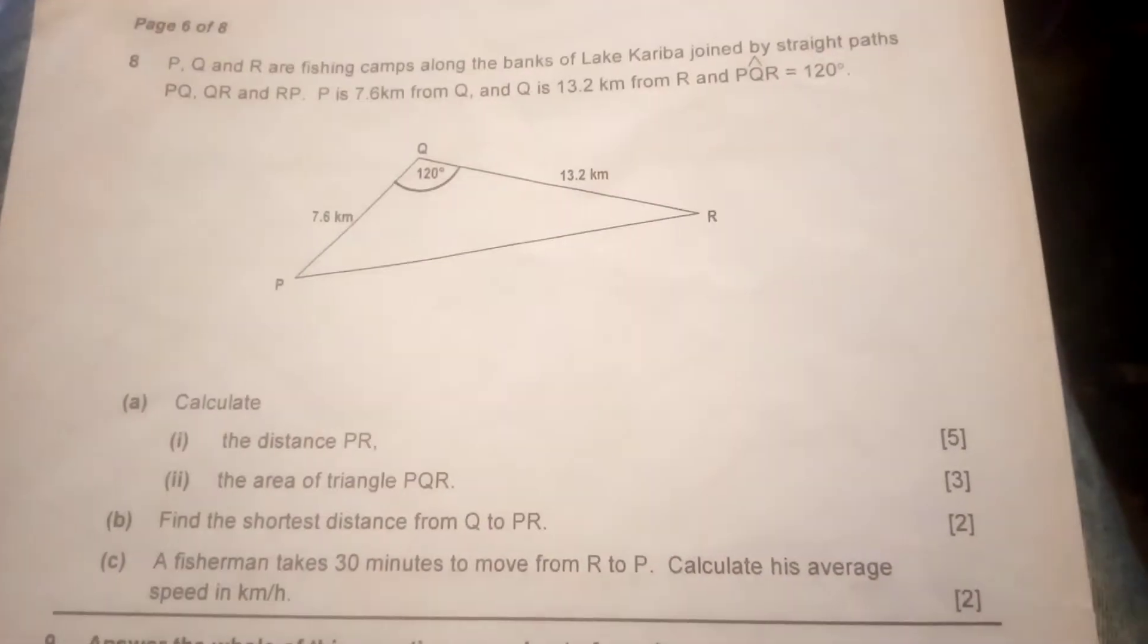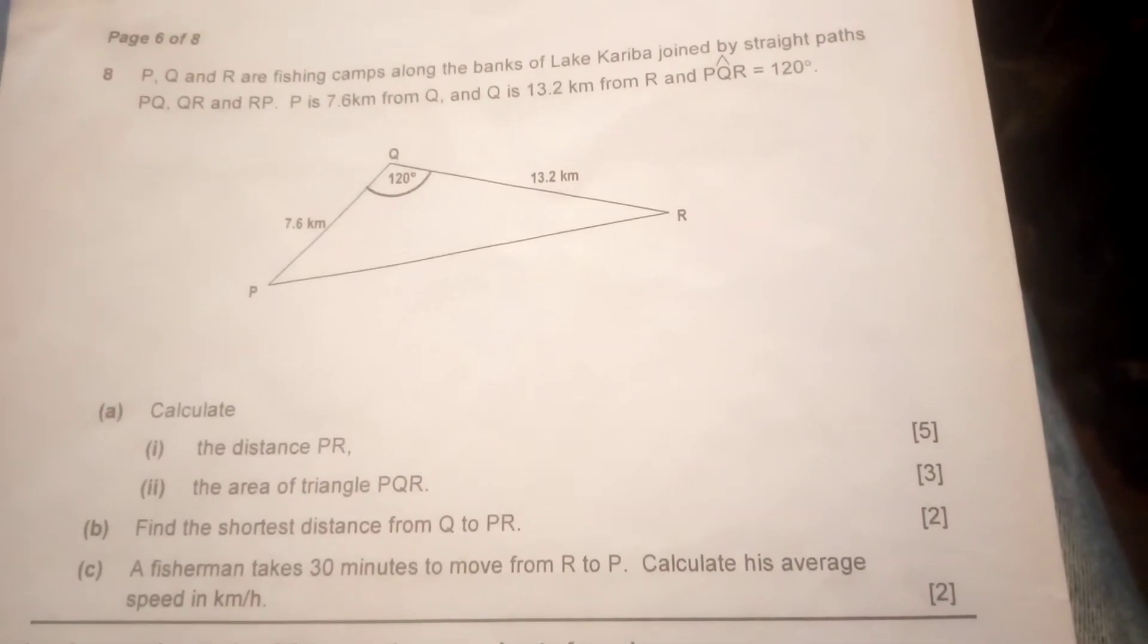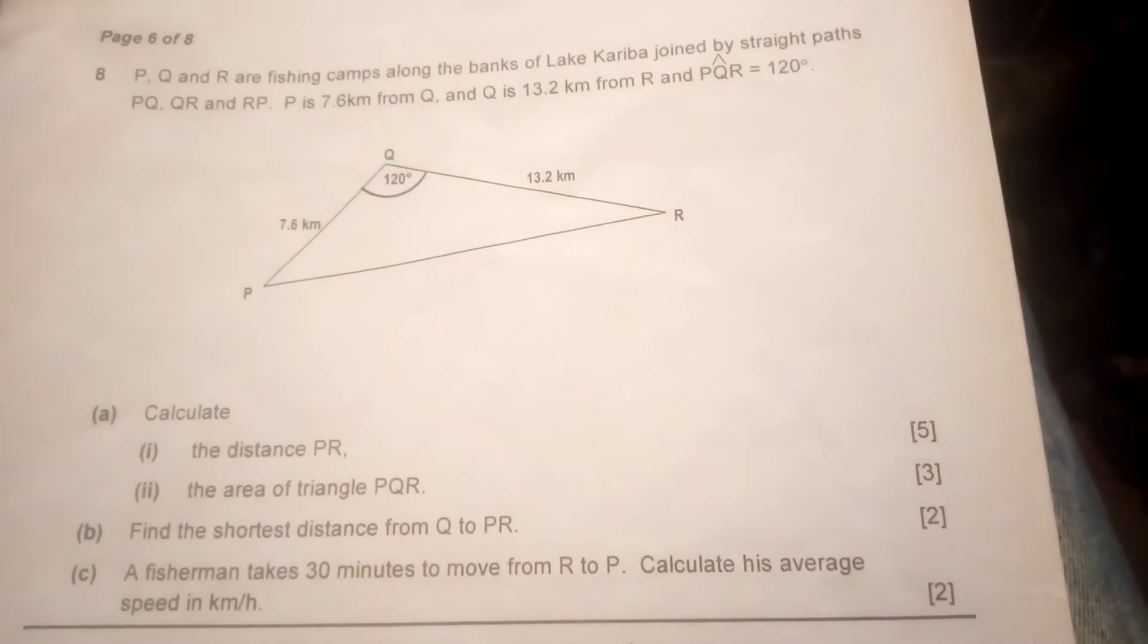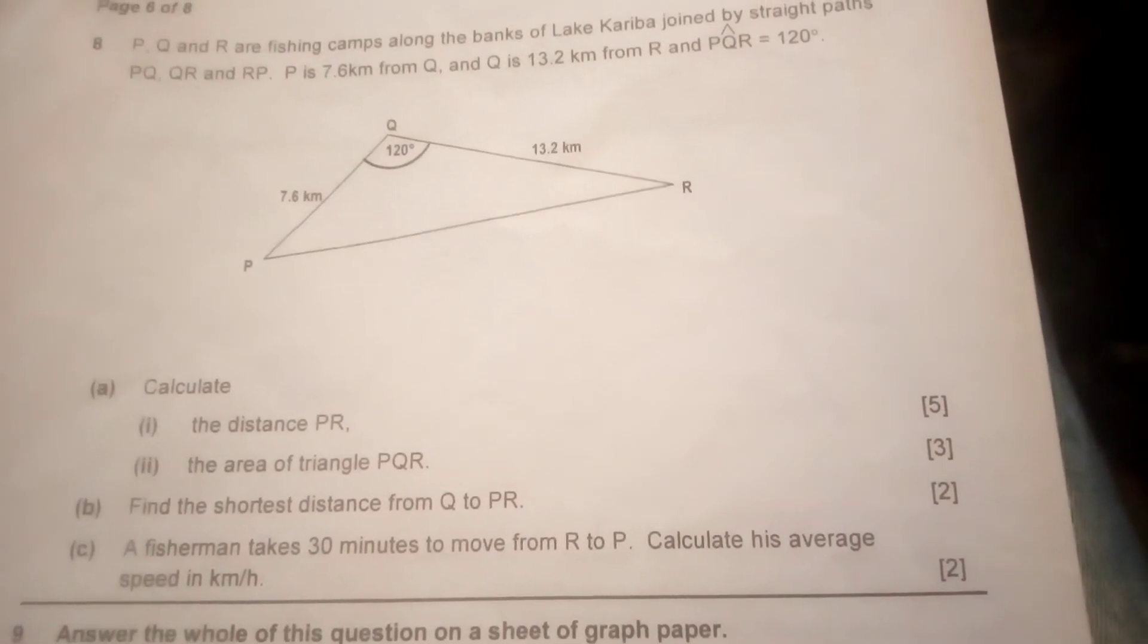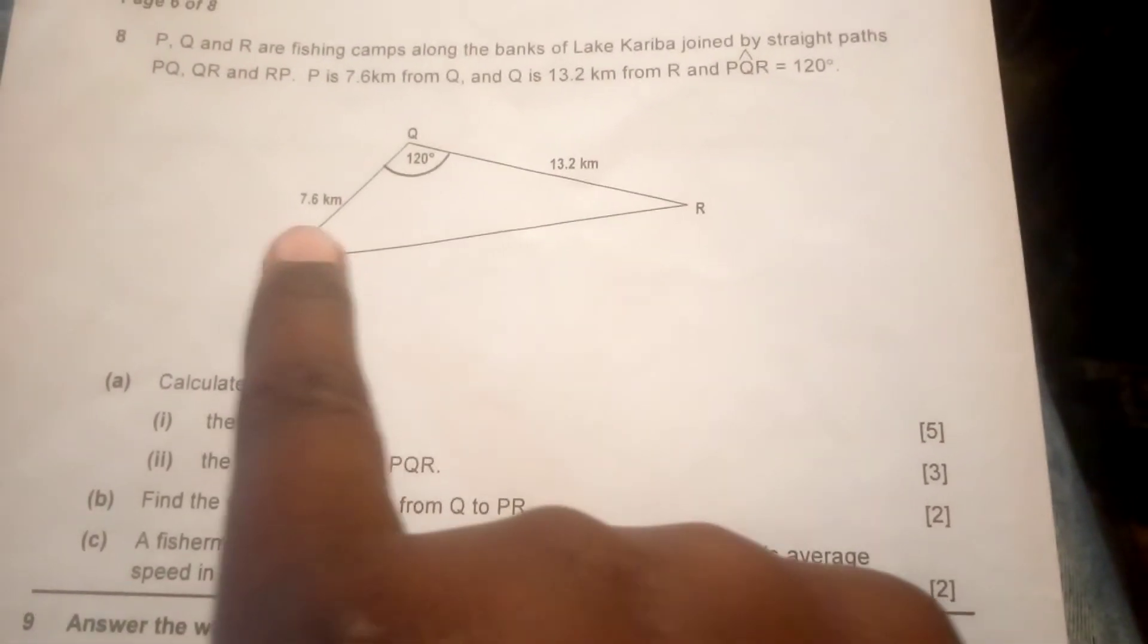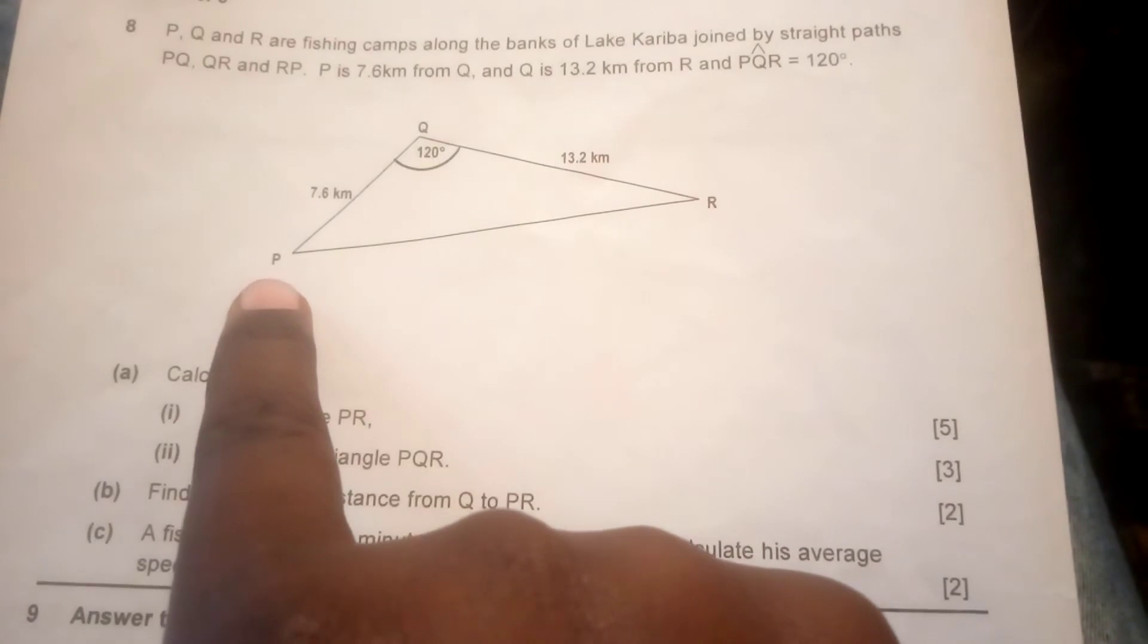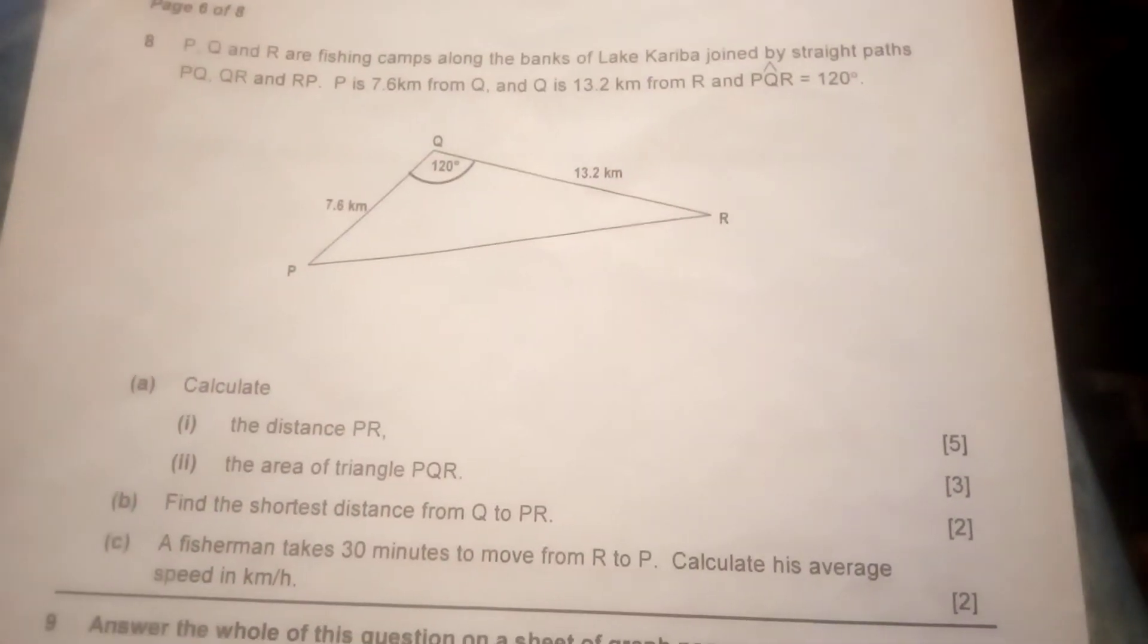Over there is the triangle which is interpreted. The question continues: calculate the distance PR. It's this distance they are talking about, PR. So how are we going to calculate that distance?